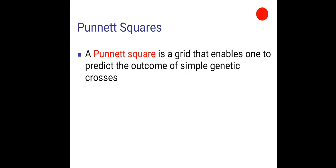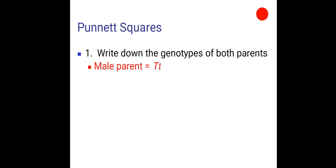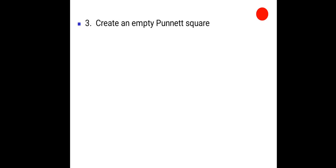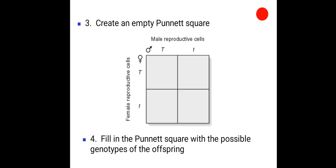Punnett square is a grid that enables one to predict the outcome of simple genetic crosses. It was proposed by the English geneticist Reginald Punnett. Now, we will illustrate the Punnett square approach using the cross of heterozygous tall plants as an example. Write down the genotypes of both parents. For male parent, capital T small t. For the female parent, it remains the same. Write down the possible gametes each parent can make. Create a Punnett square. Represent the male reproductive cells on the top and female reproductive cells on the left. Fill in the Punnett square with the possible genotypes of the offspring.